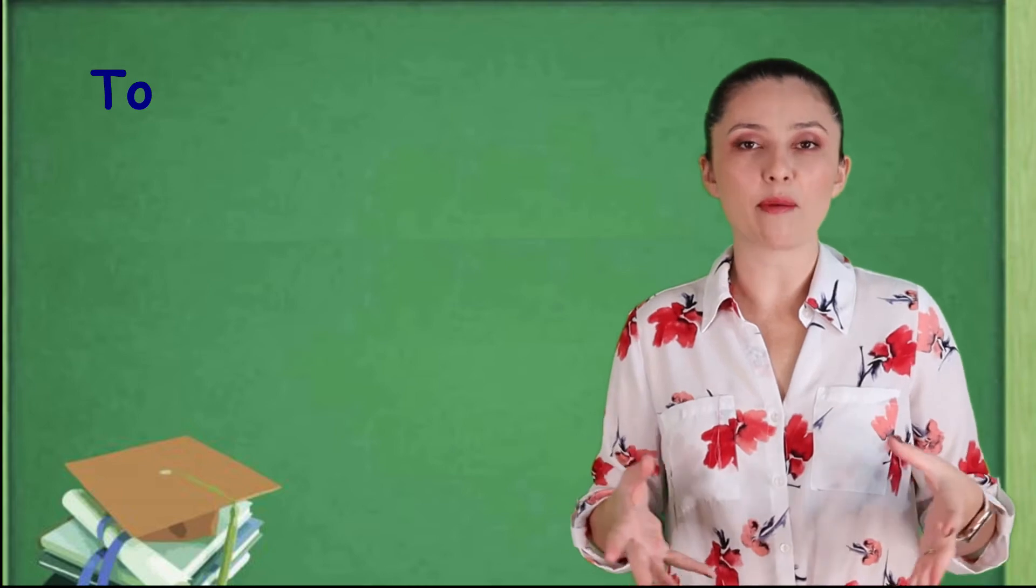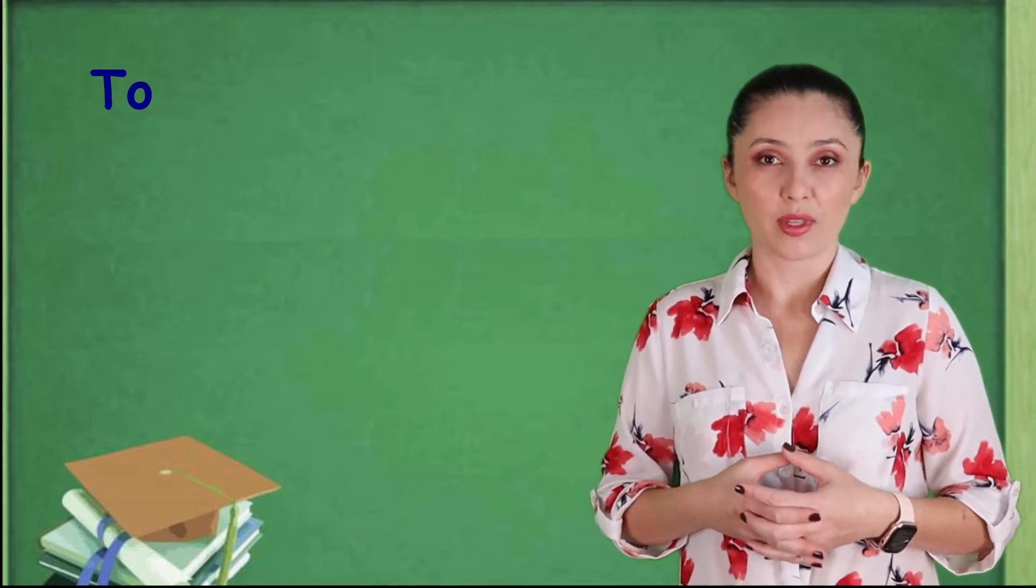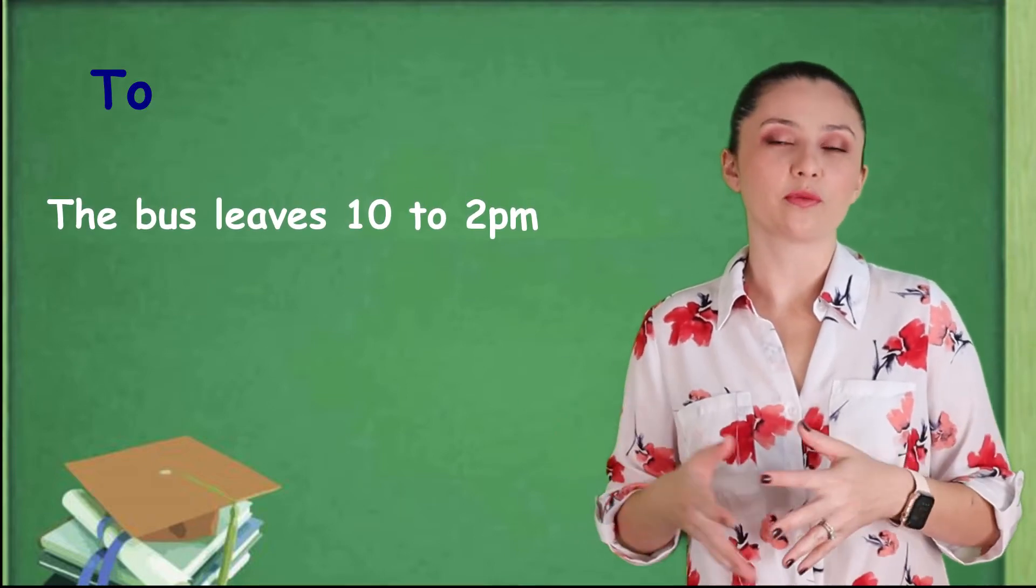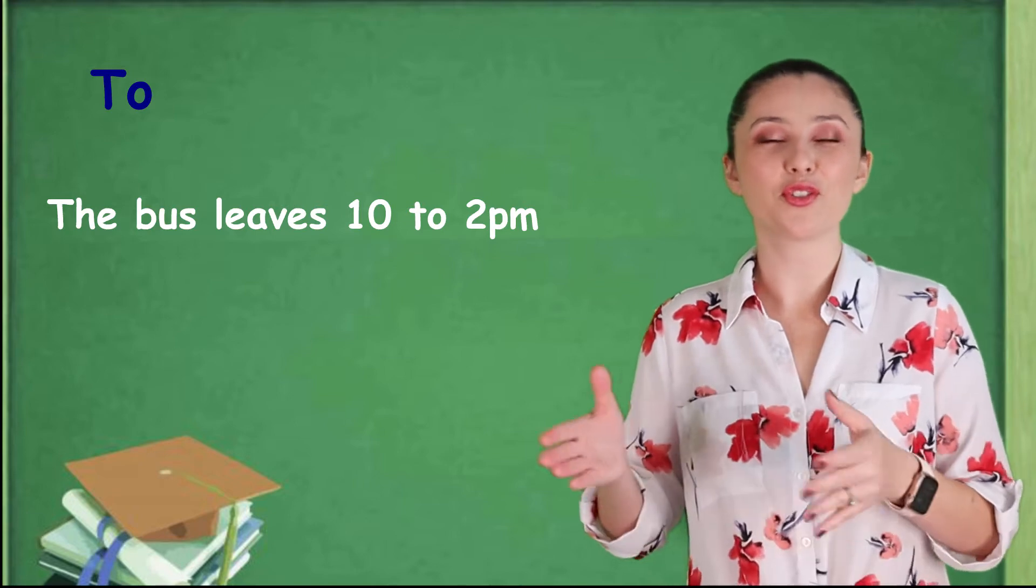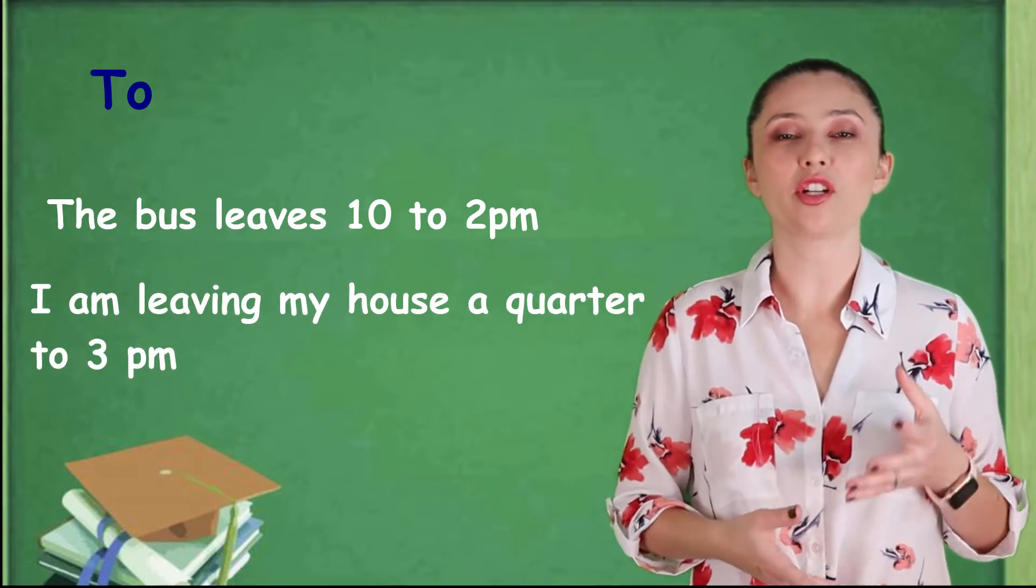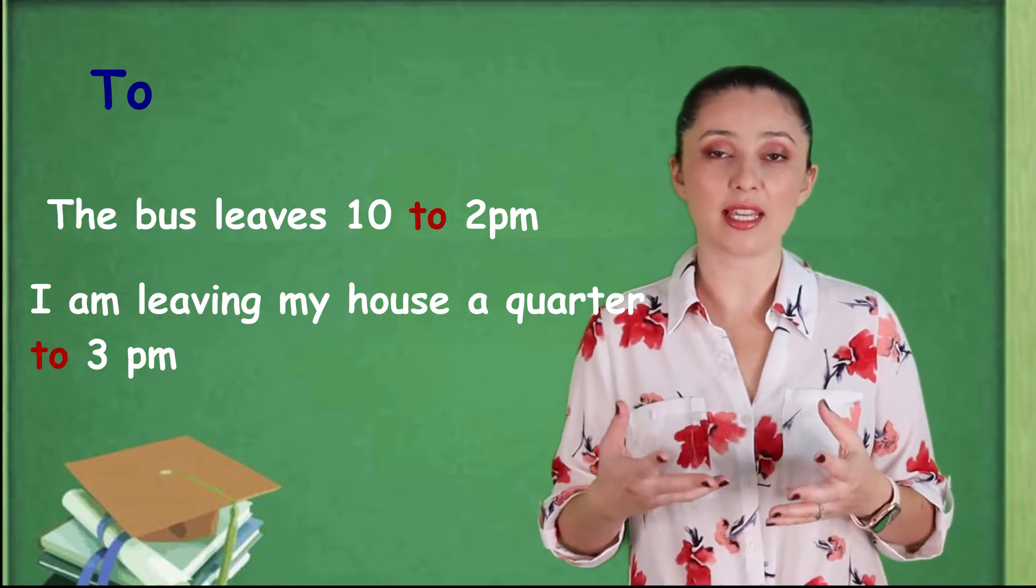Now, if you're also talking about time, you can use the preposition to. So, the bus leaves 10 to 2. 10 to 2. Or, I'm leaving my house a quarter to 3pm. Here, the preposition to is indicating time.